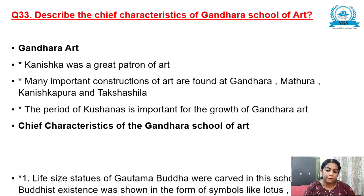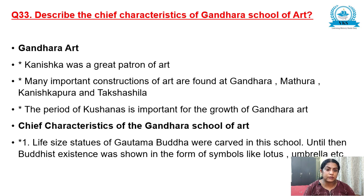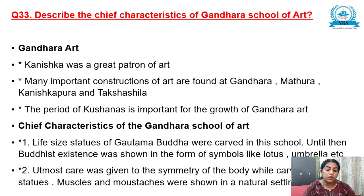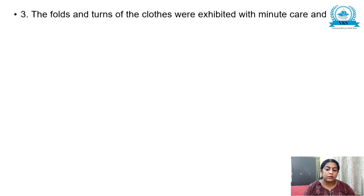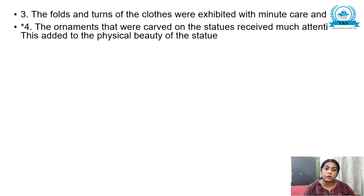Chief characteristics of Gandhara School of Art: Life-size statues of Gautama Buddha were carved in this school. Until then, Buddhist existence was shown in the form of symbols like lotus, umbrella, etc. But when Gandhara School came, life-size statues of Gautama Buddha were carved. Great care was given to the symmetry of the body — muscles and moustaches were shown in natural settings. The folds and turns of clothes were exhibited with minute care and skill. The ornaments carved on the statues also received much attention, adding to the physical beauty of the statue.